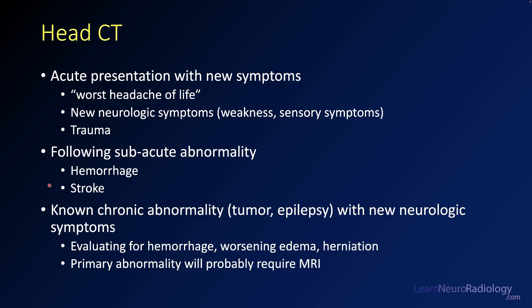We may also do a head CT if a patient has a known abnormality like a tumor or epilepsy, and if they have new findings — like a new neurologic symptom — then we're looking for something that's getting worse, whether it's hemorrhage, worsening edema, or herniation. But then you may have to continue and get an MRI to further evaluate the primary abnormality, particularly if it's a tumor or some subtle abnormality.